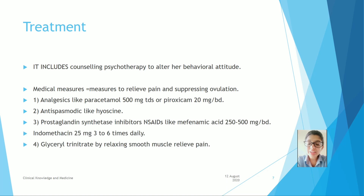Analgesics like Paracetamol 500 mg thrice a day or Piroxicam 20 mg twice a day. Antispasmodics like Hyoscine. Prostaglandin synthetase inhibitors such as Mefenamic Acid 250-500 mg twice a day, and Indomethacin 25 mg 3-6 times daily. Glyceryl trinitrate by relaxing smooth muscles relieves pain. Progesterone-containing IUCDs.